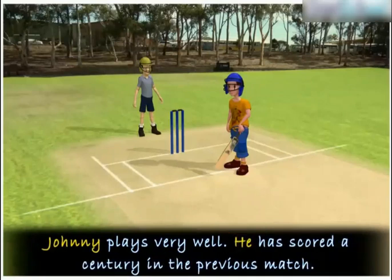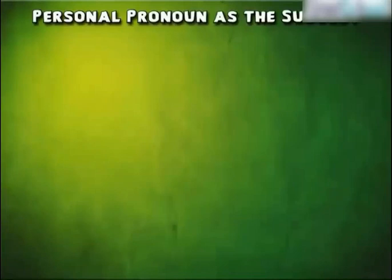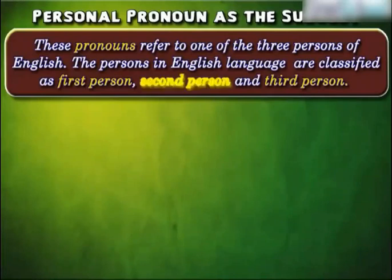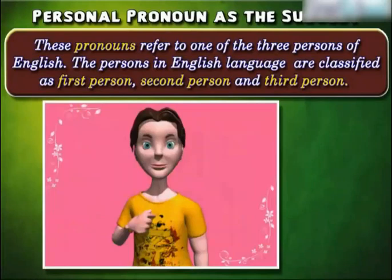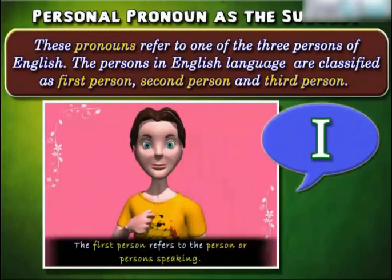If the sentence were 'Johnny plays very well. Johnny has scored a century in the previous match,' the sentence looks clumsy. Hence the second Johnny can be replaced by the pronoun 'he' referring to Johnny. Now let us understand personal pronouns as subjects. These pronouns refer to one of the three persons of English, classified as first person, second person, and third person. The first person refers to the person or persons speaking.